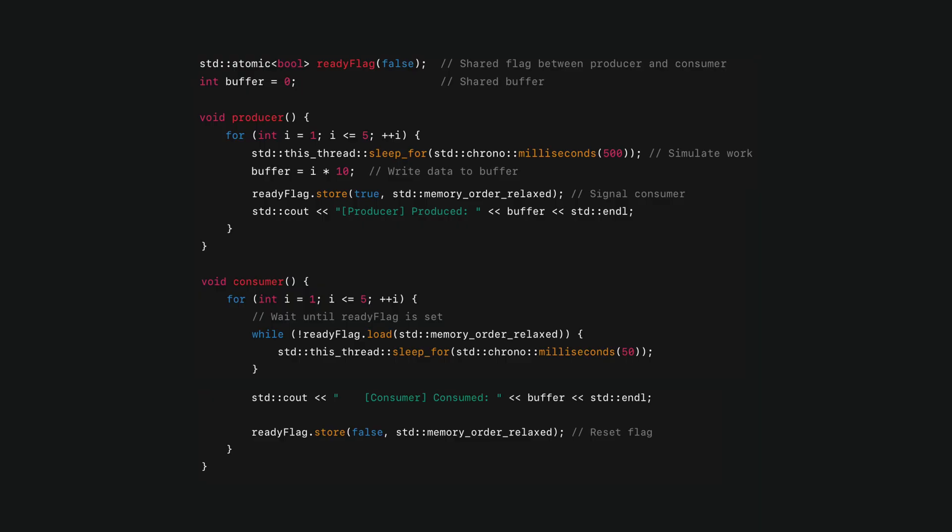Let's say you're building a producer-consumer queue. The producer writes some data into the buffer and then sets the ready flag to true. The consumer watches that flag, and when it sees it's true, it reads the data.